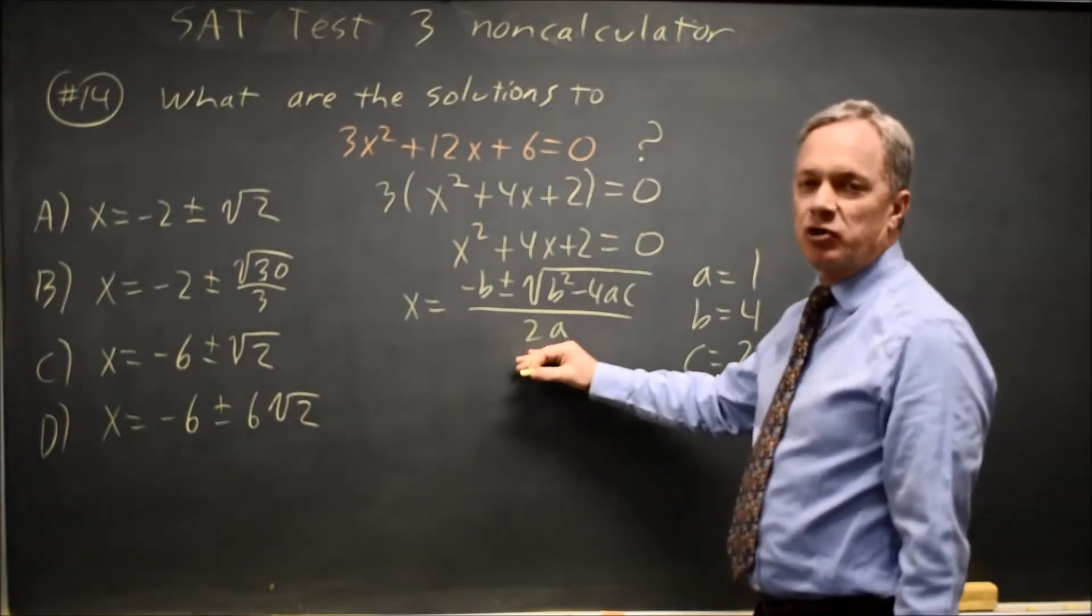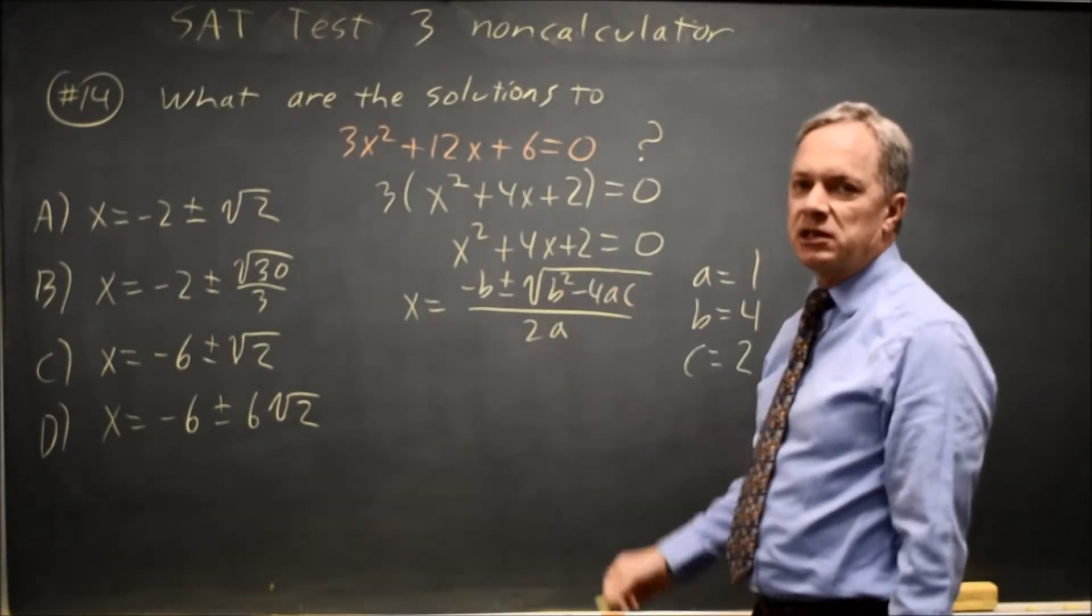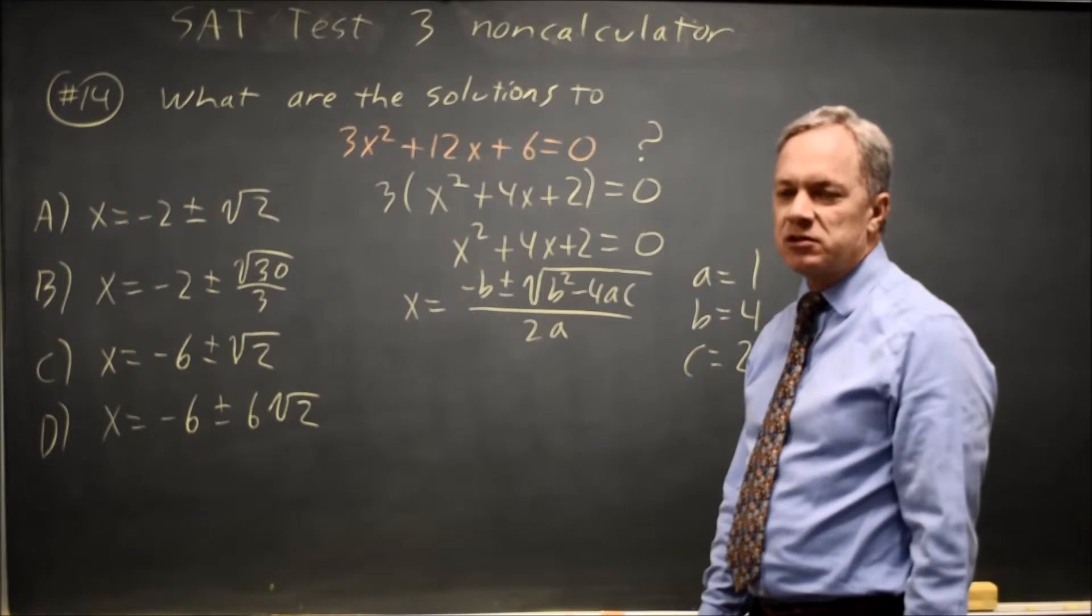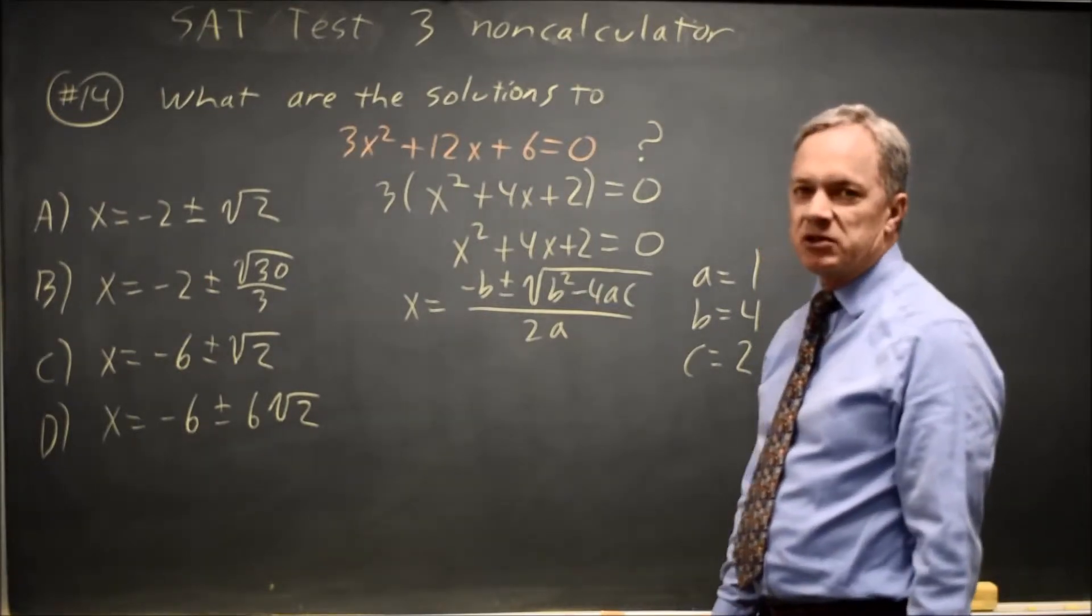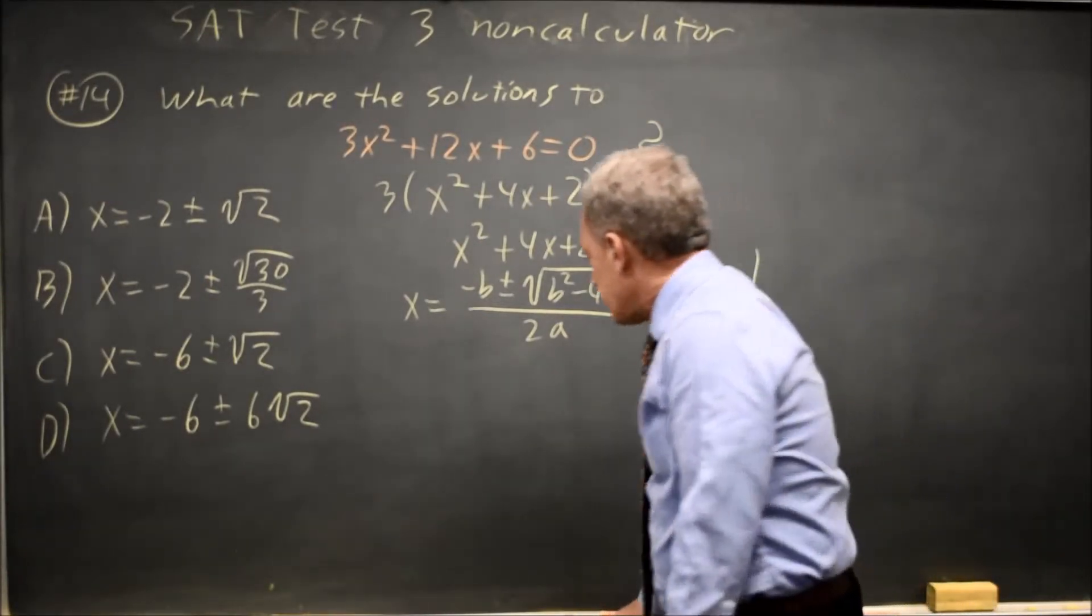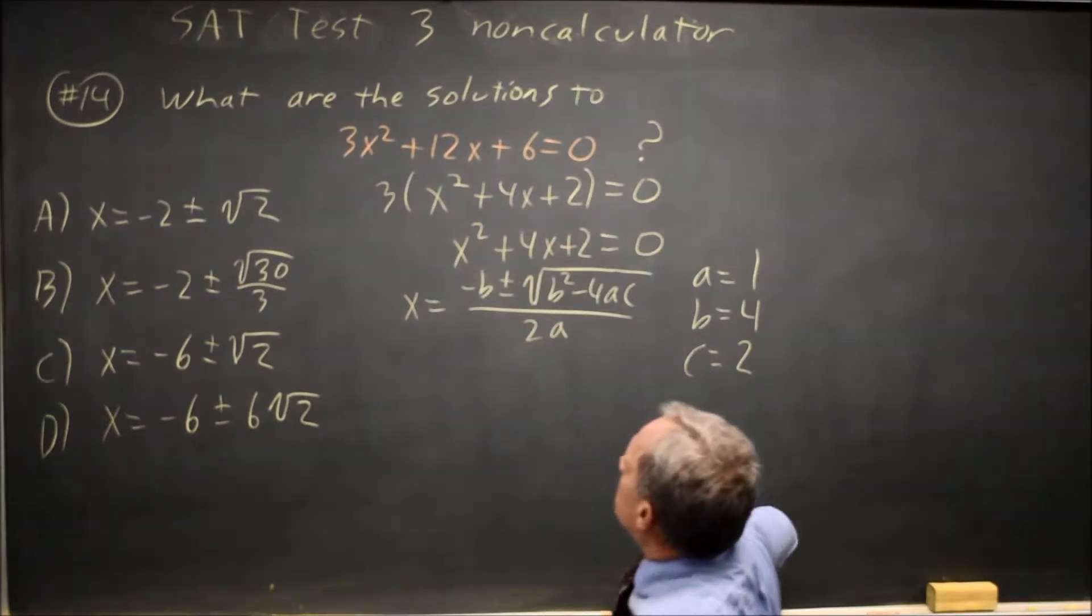And I'll always write out my quadratic formula and write the values of a, b, and c, partly so I don't swap values to the wrong location, but also so I don't drop negatives when there are negatives. I've found that I make far fewer errors if I do that.